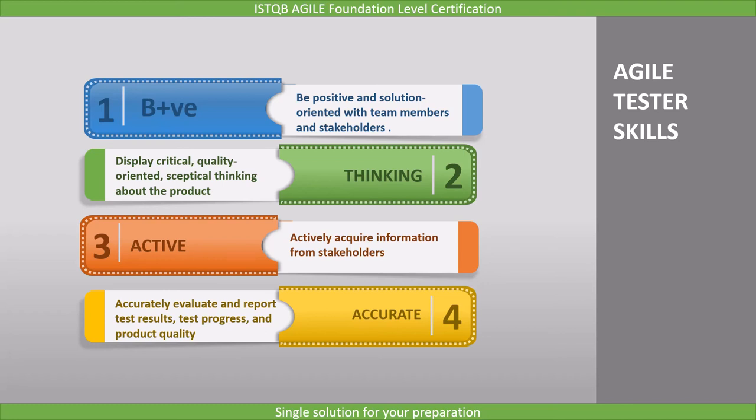Until now, we covered four skills: be positive and solution-oriented with team members and stakeholders; display critical, quality-oriented, skeptical thinking about the product; actively acquire information from stakeholders rather than relying entirely on written specifications; and accurately evaluate and report test results, test progress, and product quality.